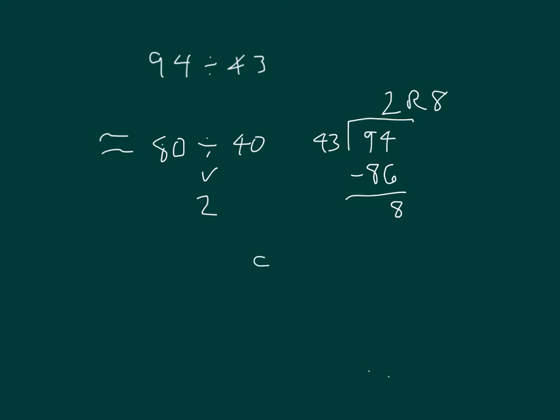Here's our check. 43 multiplied by what? Right, 2. And then we still have to do what? Add in the 8. And then, so we do get 94, which matches what we were dividing.